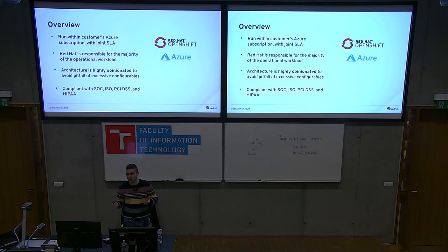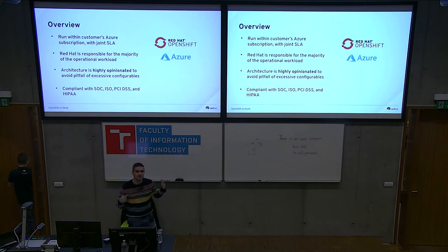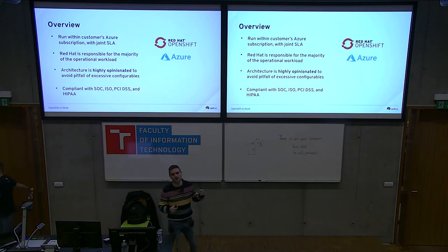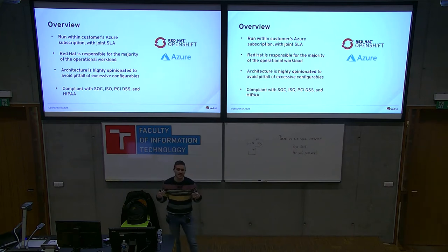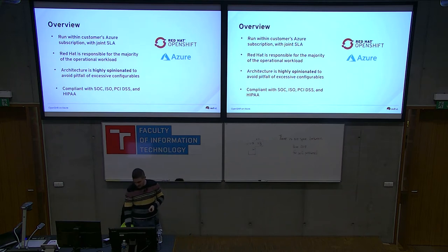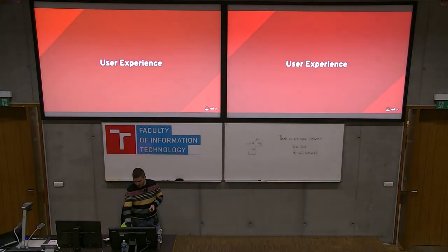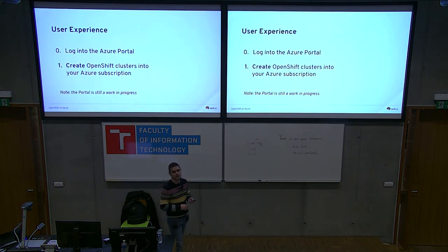Red Hat is responsible for most of the workload — that's fair because we build and know how to operate OpenShift. The architecture is highly opinionated. OpenShift is one of the most complex projects with lots of configurables, so we try to minimize the configurables exposed to customers down to a bare minimum. This makes it easier both for customers to understand how to stand up a cluster and for us to maintain clusters with as similar a configuration as possible. We are also compliant with a bunch of different standards.